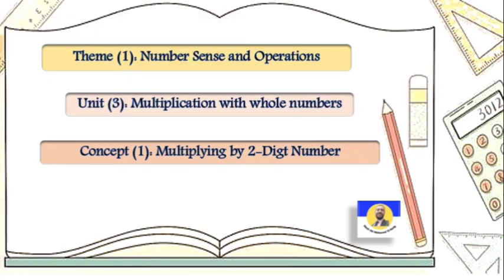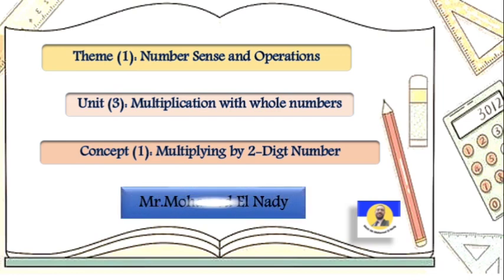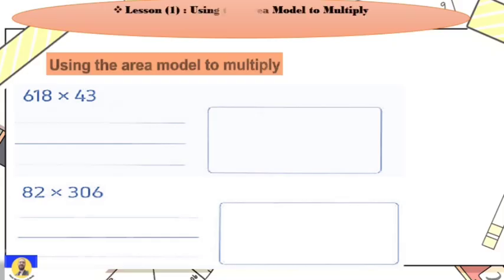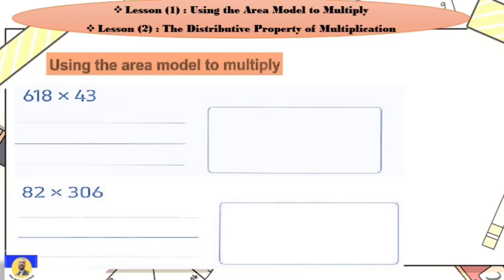Today, insha'Allah, we will complete Theme One: Number Sense and Operations, Unit Three: Multiplication with Whole Numbers, Concept One — multiplying by a two-digit number. Lesson One: using the area model to multiply. Lesson Two: the distributive property of multiplication.